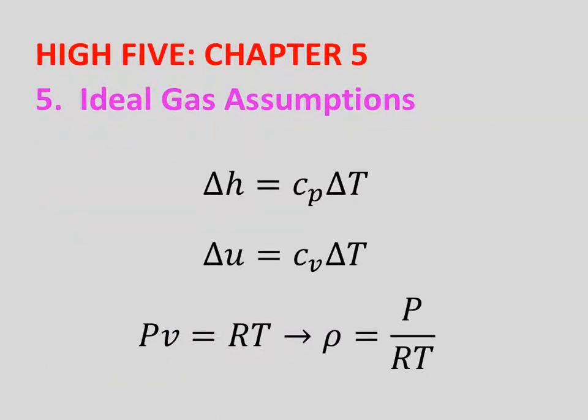Under the ideal gas assumptions, the change in enthalpy for an ideal gas equals Cp delta T. For delta U, it's Cv delta T. Pressure times specific volume, Pv, equals RT, which can be rearranged to get density equals P over RT.